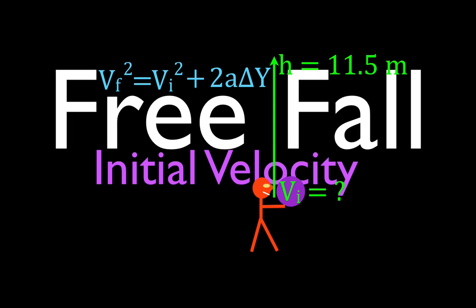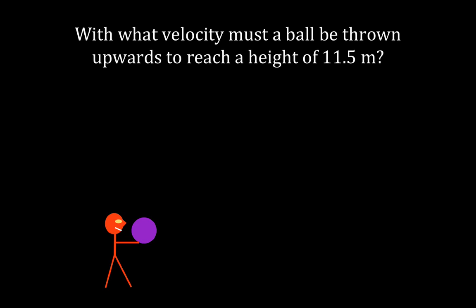Okay, in today's video we're going to go over another problem about free fall kinematics. We're going to calculate what the initial velocity of an object must be if we project it straight up and we want it to reach a height of 11.5 meters.